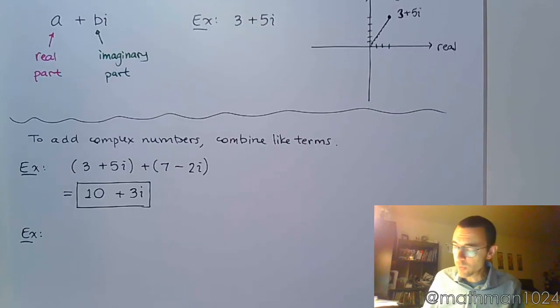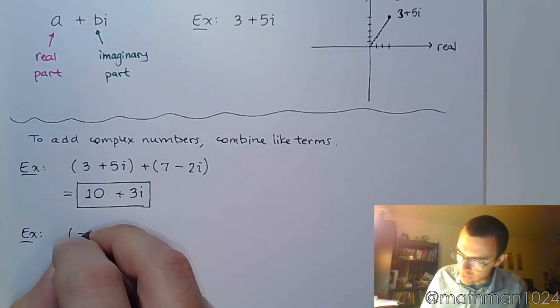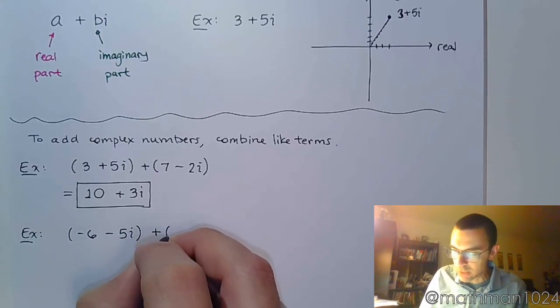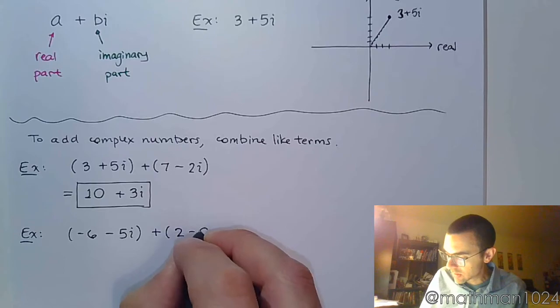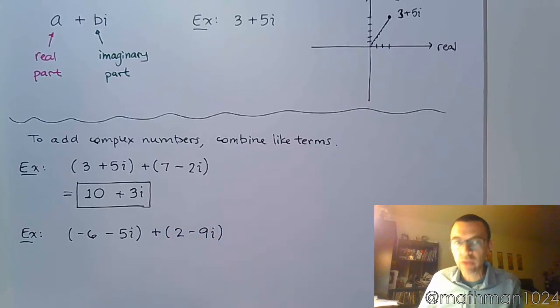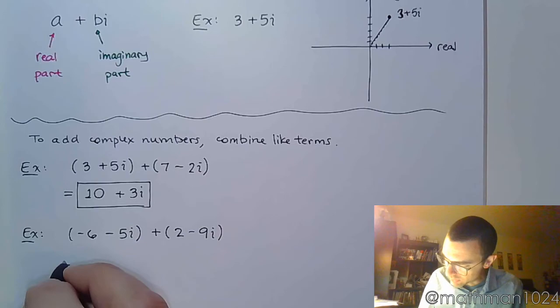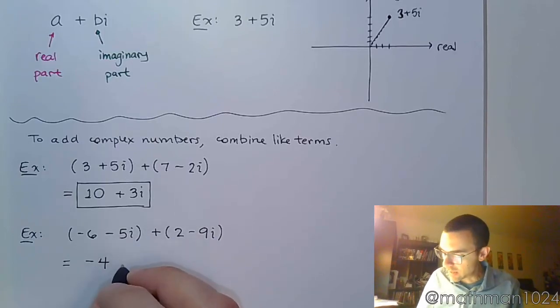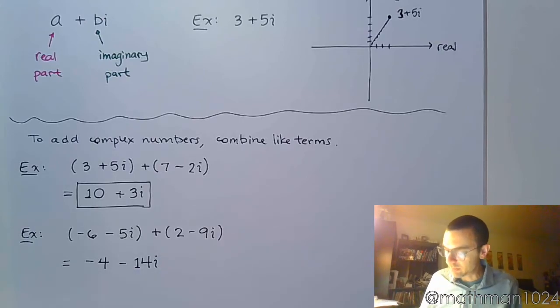All right, so if I have negative 6 minus 5i plus 2 minus 9i, well we do the same thing as before. We just combine like terms because this is addition. So we have negative 6 plus 2, that's negative 4. Negative 5i minus 9i gives me negative 14i.